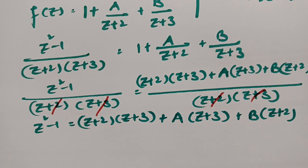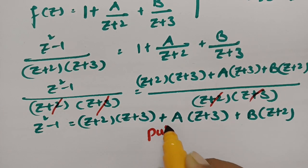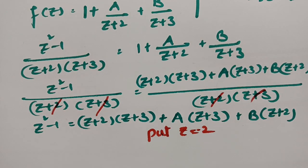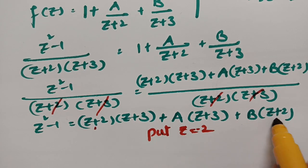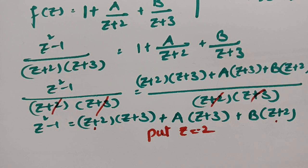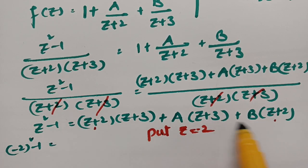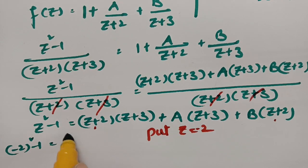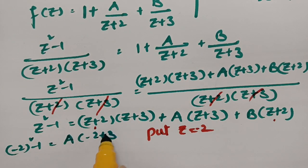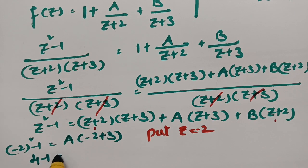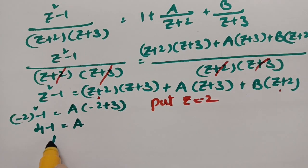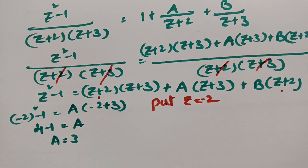To find A and B, put z = -2. The terms with (z+2) become 0, so (-2)²-1 = A(-2+3), giving 4-1 = A(1), so A = 3.